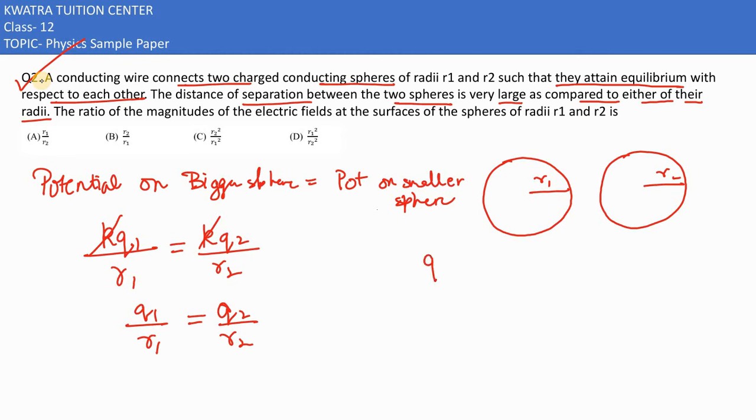Left side upon right side, K cancels. So you have Q1 over R1 and Q2 over R2. It would be Q1 over Q2, and what will happen? R1 over R2 would be there.